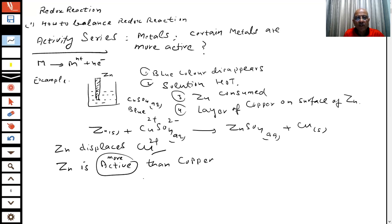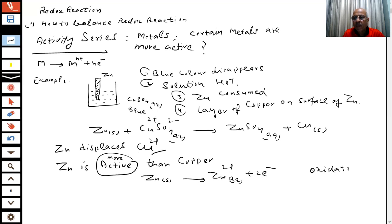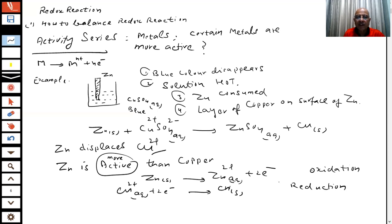Zinc has a greater tendency to give electrons compared to copper — zinc has more affinity to give the electron. When zinc gives the electron, zinc is undergoing oxidation. The copper ions are gaining these electrons — zinc is giving the electron and copper undergoes reduction.